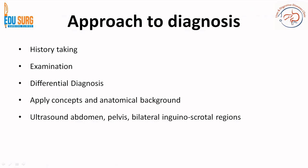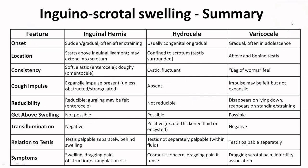Once the history has been taken and examination performed, the differential diagnosis is in your mind and the anatomical concepts are clear. At most, a test you may need is an ultrasound of the abdomen and pelvis, and we always advise bilateral inguinoscrotal regions. What we now need to understand is how we can differentiate the various etiologies when it comes to inguinoscrotal swelling, and once we know it is a hernia, how we can differentiate the different types. We will also look at important points commonly asked in exams, as well as the layers covering the inguinal hernia.